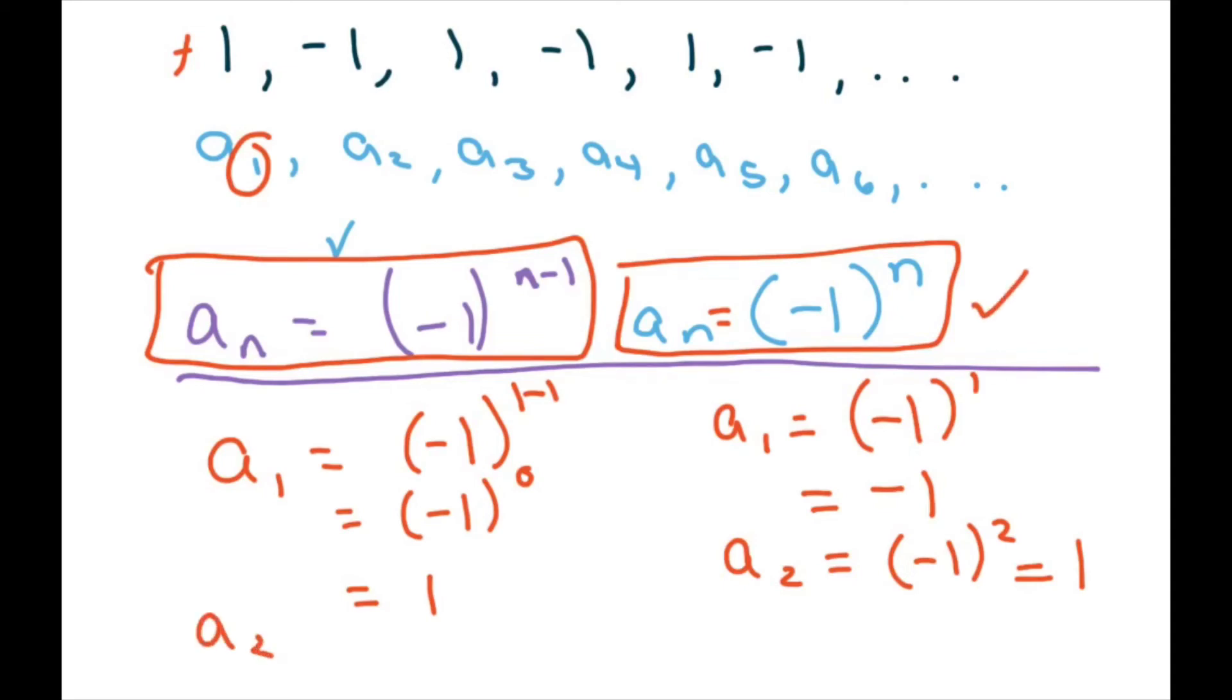So a sub two here would equal negative one to the two minus one, which equals negative one to the first power, which equals negative one, which would give us that one there.